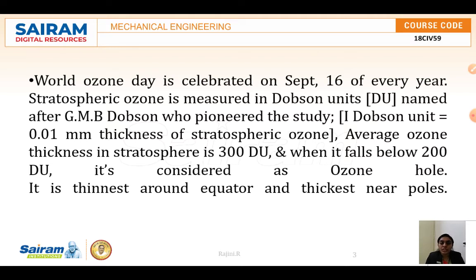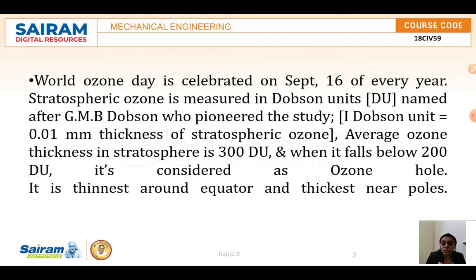Stratospheric ozone is measured in Dobson Units (DU), named after G.M.B. Dobson who pioneered the study. One Dobson Unit equals 0.01 mm thickness of stratospheric ozone. The average ozone thickness in the stratosphere is 300 DU, and when it falls below 200 DU it is considered an ozone hole. This is also an expected exam question.